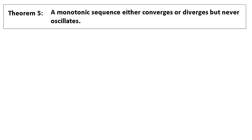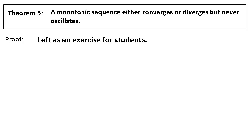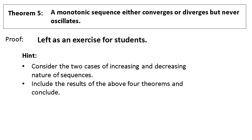Theorem 5: A monotonic sequence either converges or diverges, but never oscillates. Any monotonic sequence is either convergent or divergent, but not oscillatory. I am not going to prove this theorem — it is left as an exercise for students. The hint is to consider two cases: monotonic increasing and monotonic decreasing, and use all of the above four theorems to conclude.